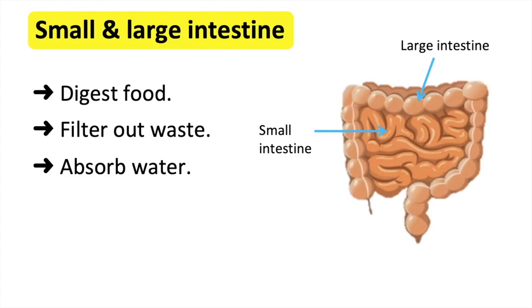This food then passes through the large intestine. Water and salt is absorbed here. This causes the waste products to turn into a solid waste material, which can then be excreted.